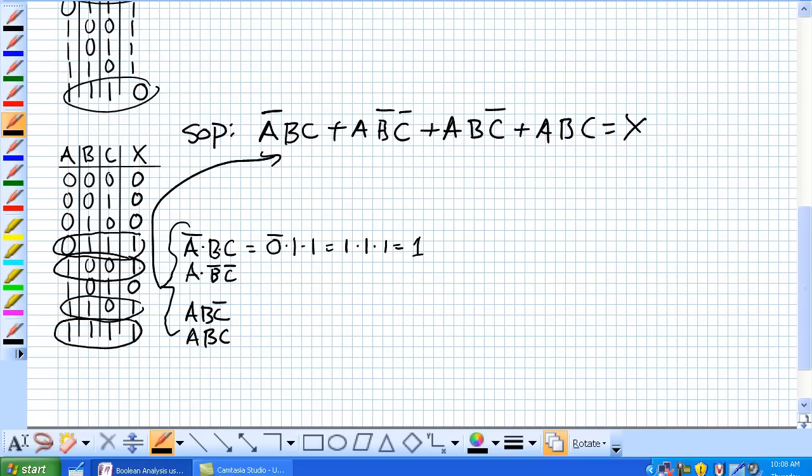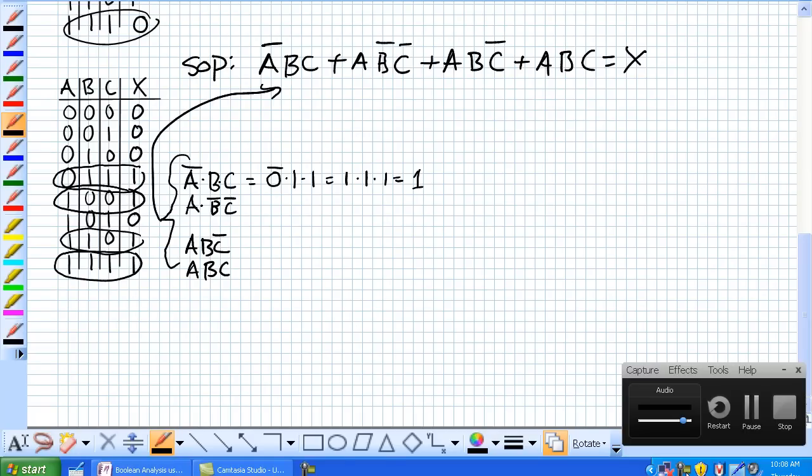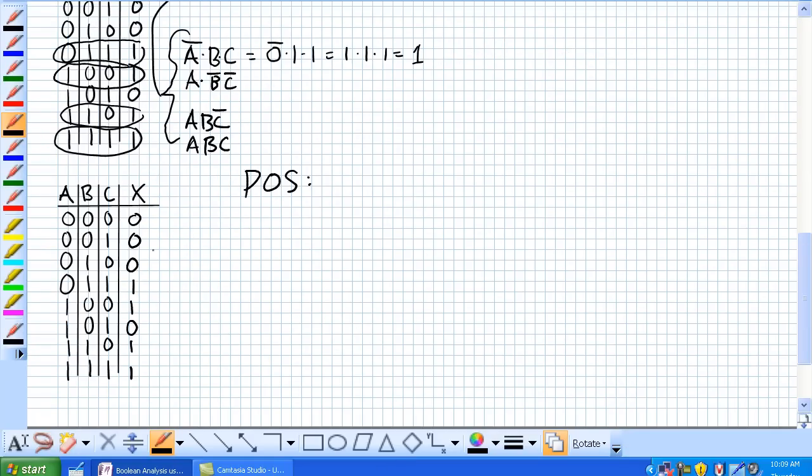Now, product of sums, it is the opposite, converting each 0 to sum and multiplying the results. So let's use the same truth table and determine what are product of sums. I'm going to move this down here so we'll have some room. So product of sums, we're looking for the 0s.